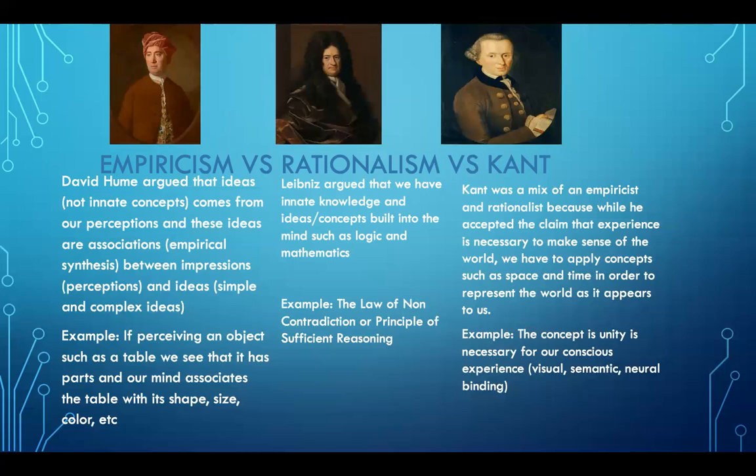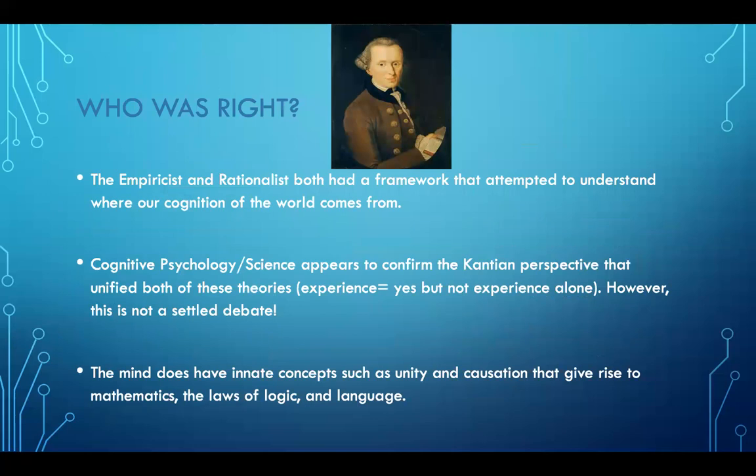We can think about problems in cognitive neuroscience today, such as visual, semantic, and neural binding: how does our conscious experience all come together as one? Looking outside, my occipital lobe is at work, but I'm also using my imagination, going back into the past. My brain is doing many things at once, putting bits and pieces together — but how does it all come to one unified experience? That's the neural binding or visual binding problem that we're still trying to understand.